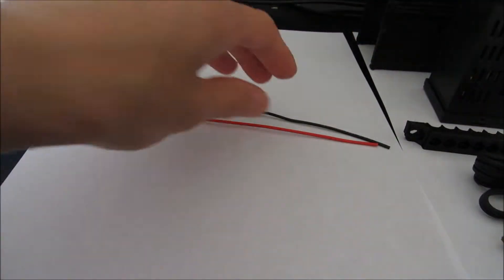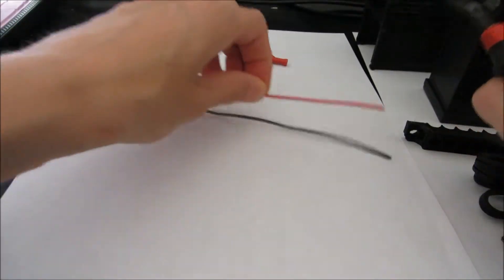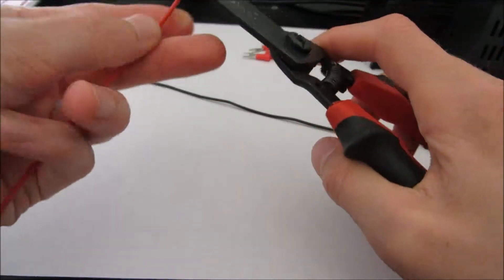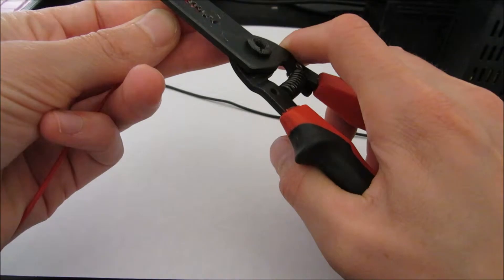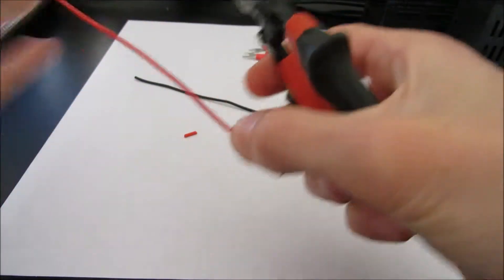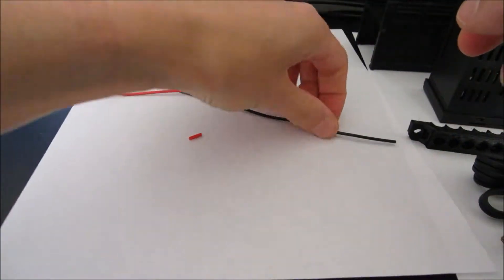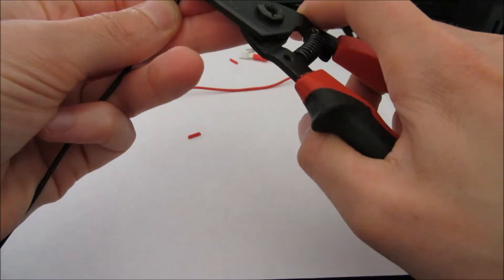We will strip using our wire strippers about three quarters of a centimeter of wire off of each of the ends. And we want to do this on both sides of the red and the black wire.